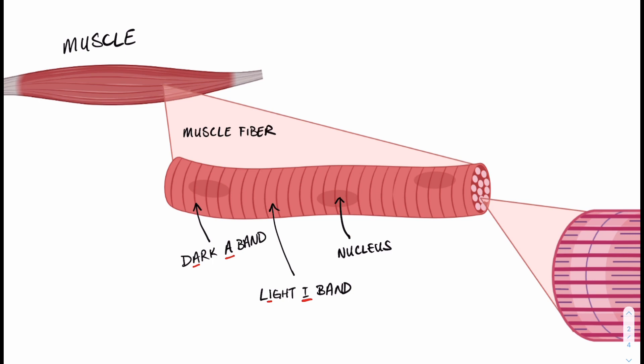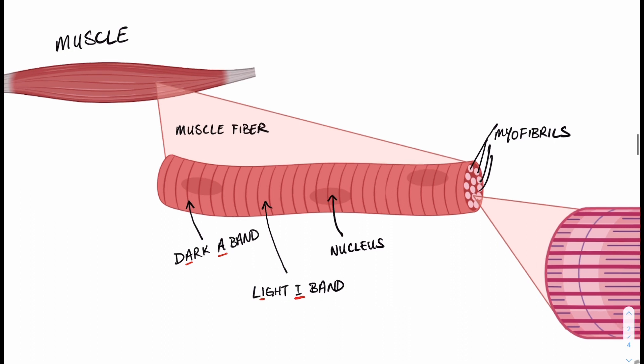The muscle fiber—the sarcolemma, unlabeled here, is actually what is holding all those myofibrils together. So the sarcolemma is the outer sheath and the myofibrils are inside of it, and many myofibrils form one muscle fiber.